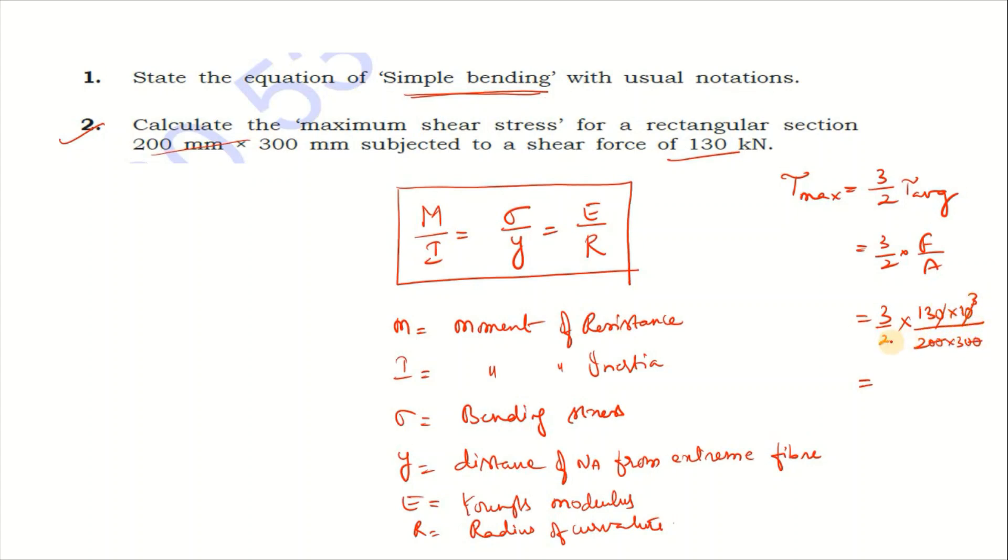So 3 into 130 by 2, this 3 cancels, 13 by 2, then 13 by 4, which means 3.25 newton per mm square. This is the simple formula for rectangular section.